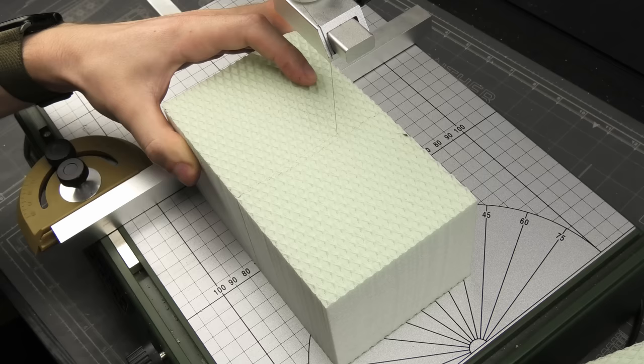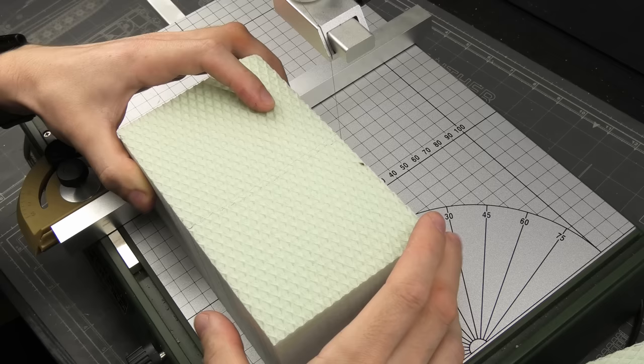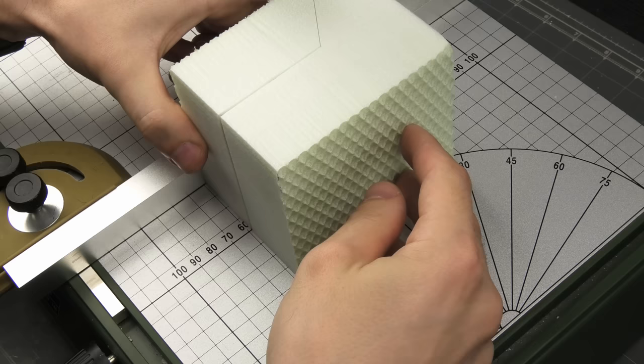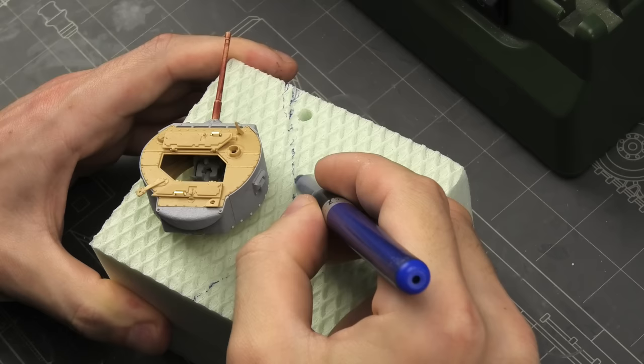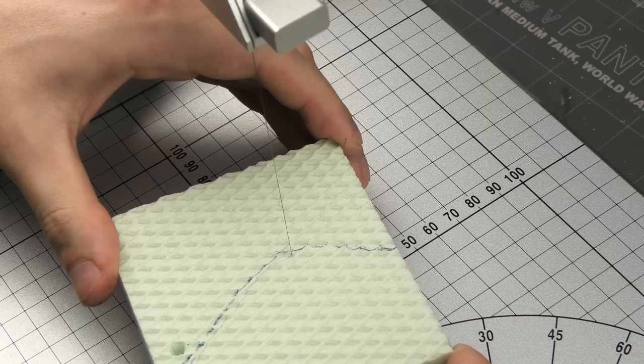Working with styrofoam and a hot wire cutter is so awesome if you're into miniature sceneries - it opens up so many possibilities. Because this scene is gonna have two main levels, I've cut the foam brick in half. The bottom will be the creek, while the upper half will be a creek bank.